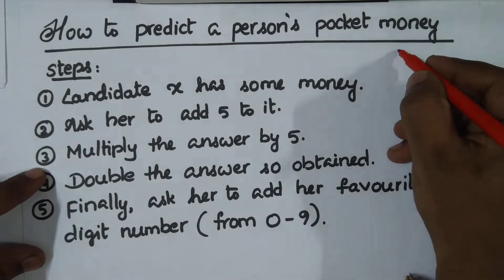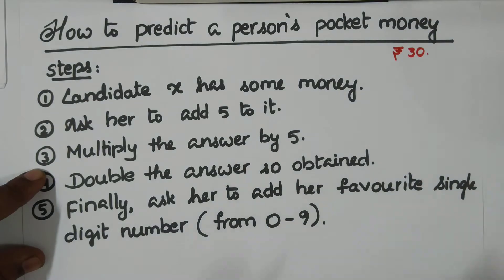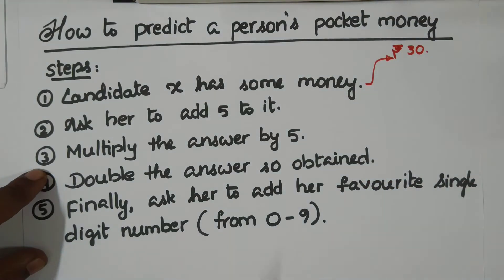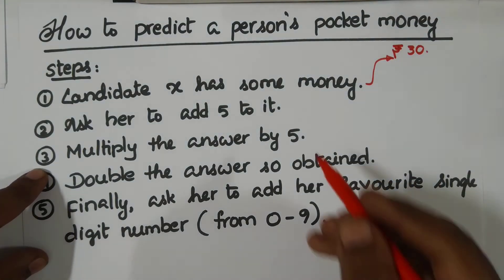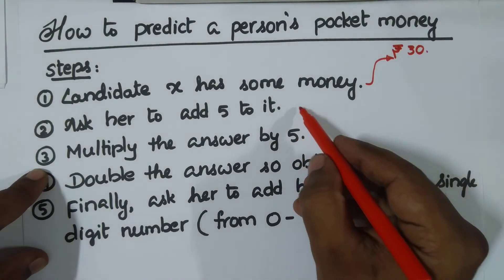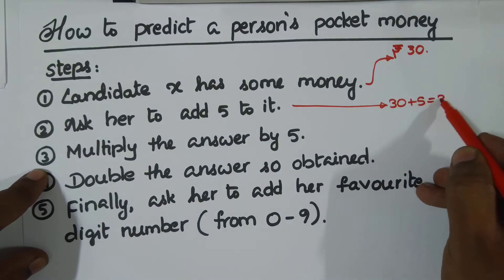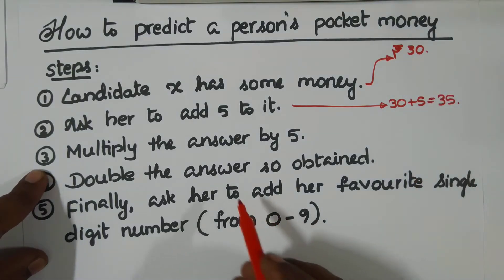For example, let's take you have rupees 30. You will not tell this out. You have that mentally. Now just add five to it. 30 plus five, so this is 35.